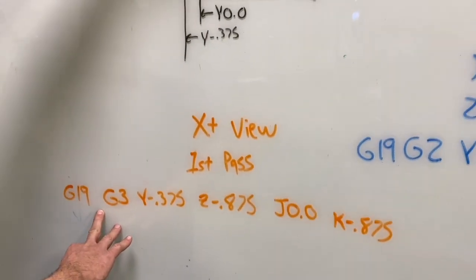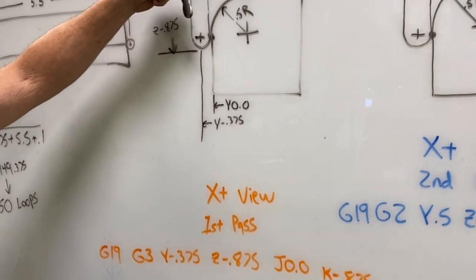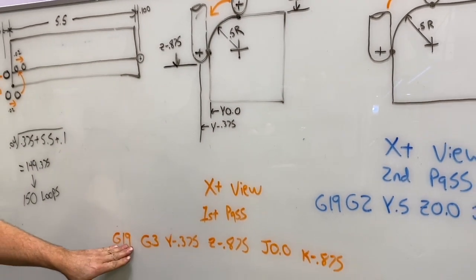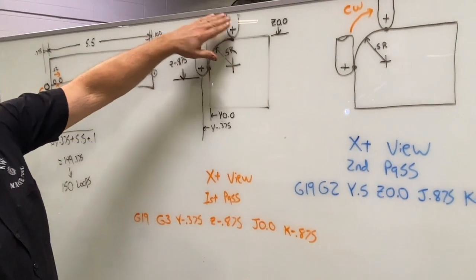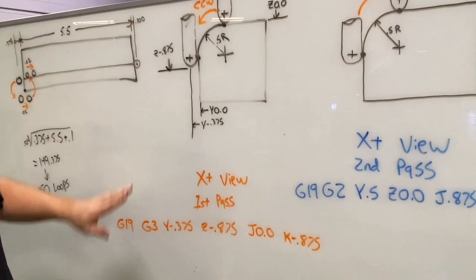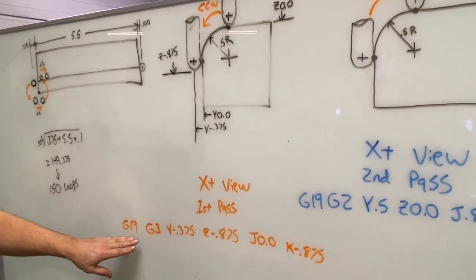Now since we're interpolating in our Y and Z axis, we're going to have to switch our interpolation plane to G19. That's going to allow us to interpolate an arc move in the Y and Z axis there.